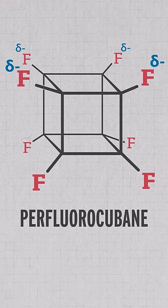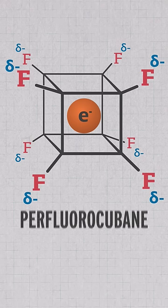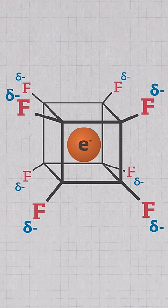Because fluorine pulls so much electron density towards itself, the center of this box is wildly electron deficient, which means that just for the minutest period of time, the box can actually hold one electron. A single, naked electron.